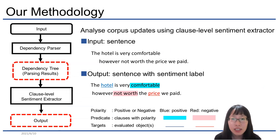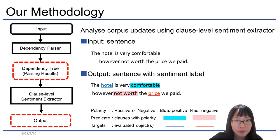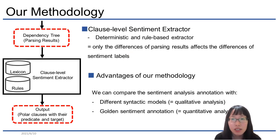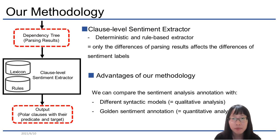First, we input sentences in a language. Then, as output, we will receive sentences with sentiment indicators and targets labeled by a cross-level sentiment extractor. The input text is parsed by a dependency parser trained on the UD corpus. The dependency tree, which is the parsing result, differs depending on the version of the UD corpus. We input the obtained dependency tree into the cross-level sentiment extractor. This is a deterministic and rule-based extractor where the sentiment lexicon and rules are fixed. The most important thing is that only the differences of the UD corpus used for training make the differences of the final output.